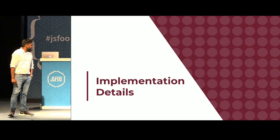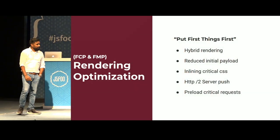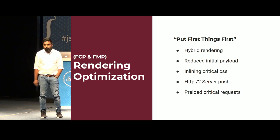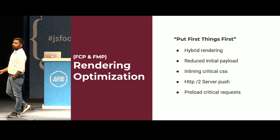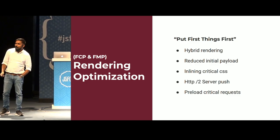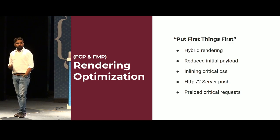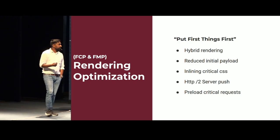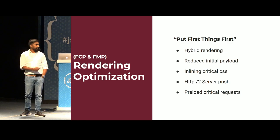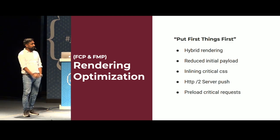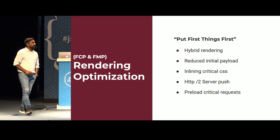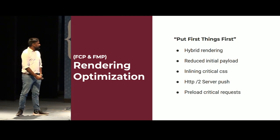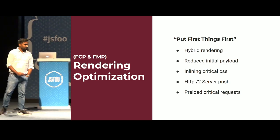Let me walk through the implementation details. The first was rendering optimization, with the principle of putting first things first — only ship resources required to make the page interactive, show content that's visual to the user, and make the website meaningful. The methods we used include hybrid rendering, reduced initial payload, inlining critical CSS — note the word 'critical' is very important — HTTP/2 server push, and preloading critical resources.